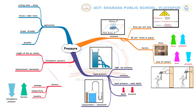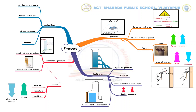The next branch deals with atmospheric pressure. It can be defined as the pressure exerted on the surface of an object by the weight of the column of air above it. Atmospheric pressure is measured using an instrument called a barometer. The factors that influence atmospheric pressure are altitude, temperature, and humidity. With an increase in each factor, atmospheric pressure decreases.